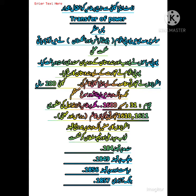میسور کی ریاست پر قبضہ کرنے کے بعد انگریز سندھ کی طرف بڑھے اور 1843 میں سندھ پر قبضہ کر لیا۔ اس وقت سندھ کے حکمران نصیر خان ٹالپور تھے۔